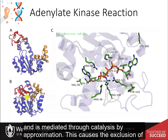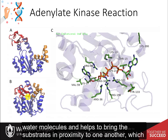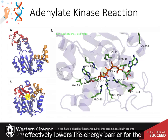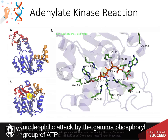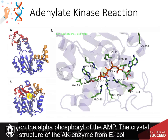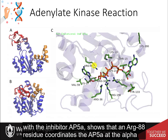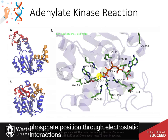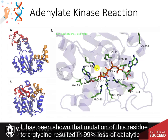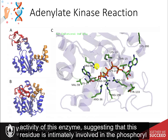Closing of the lid domain causes the exclusion of water molecules and helps to bring the substrates in proximity to one another, which effectively lowers the energy barrier for the nucleophilic attack by the gamma phosphoryl group of ATP on the alpha phosphoryl of the AMP. The crystal structure of the AK enzyme from E. coli with the inhibitor AP5A shows that an arginine 88 residue coordinates the AP5A at the alpha phosphate position through electrostatic interactions. It has been shown that mutation of this residue to a glycine results in 99% loss of catalytic activity of this enzyme, suggesting that this residue is intimately involved in the phosphoryl transfer.